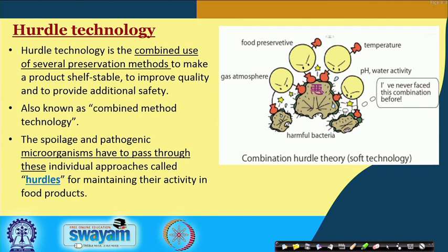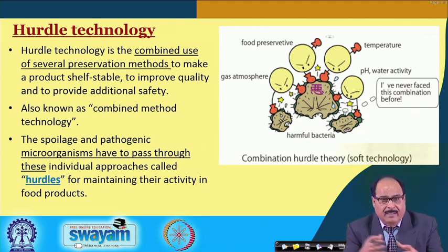It is also known as combined method technology. The spoilage and pathogenic microorganisms are not able to jump over the individual factors which are applied to the food — that is the combined factors which are generally called hurdles.